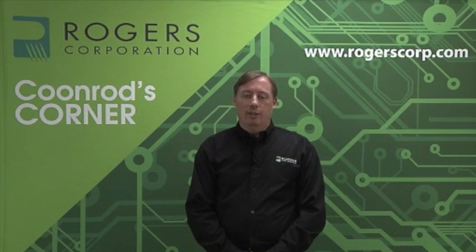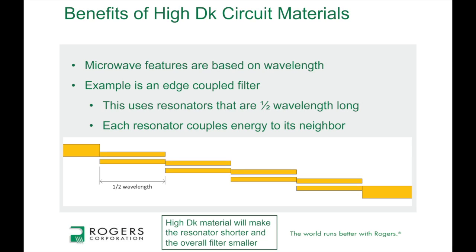As an example, I've shown here an edge-coupled bandpass filter. Each one of these arms is a resonator whose physical length is half wavelength for the intended frequency. The resonator generates energy and couples it to the next one, stepping energy through by coupling from one resonator to another — all based on half wavelength. With high dielectric constant materials, this physical length becomes smaller because the wavelength actually gets shorter when using high Dk materials.